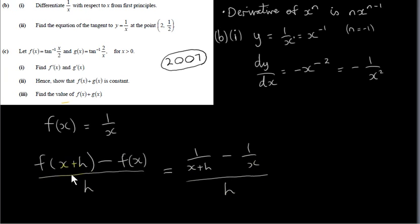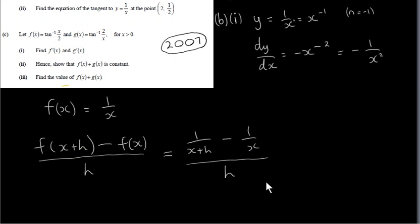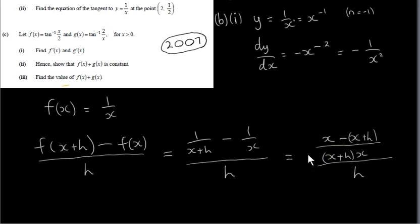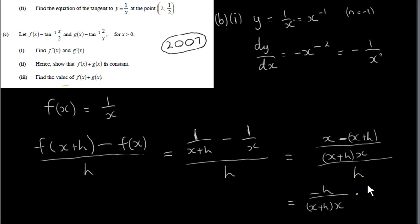We also take the limit as h tends towards 0 of this quotient — that's our derivative. We write the two fractions on top as a single fraction by finding a common denominator: multiply x plus h by x. Dividing x plus h into the common denominator gives x; multiply x by 1. Then we divide x into the common denominator to get x plus h; x plus h times 1 is x plus h. With the minus sign, we get x minus x minus h, giving minus h over x plus h times x, divided by h.